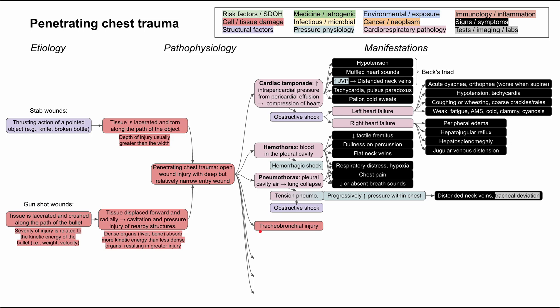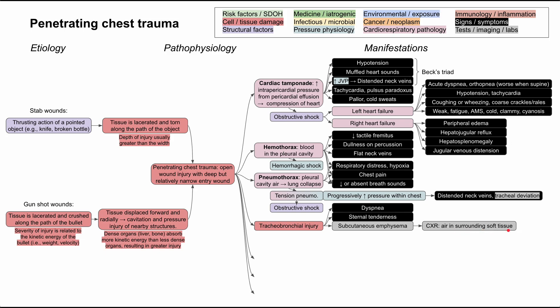Another potential injury is tracheobronchial injury — damage to the large structures of the airway. This can lead to shortness of breath, sternal tenderness, and chest pain. A characteristic finding is subcutaneous emphysema — air under the skin — and on chest x-ray you may see air in the surrounding soft tissues. Patients can also have hoarseness or dysphonia and bloody tracheal secretions.